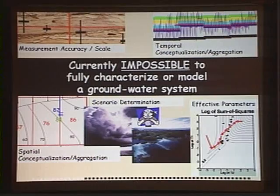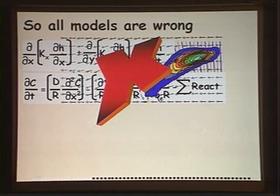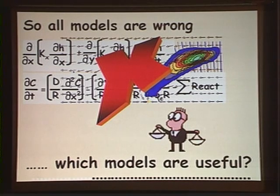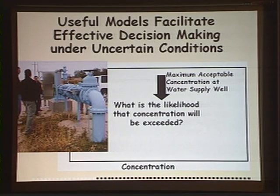It's currently impossible to fully characterize a groundwater system, or if we could, to fully represent it on a computer. Because of this, all our models are wrong. George Box said all models are wrong, some are useful, but he's left us with that challenge of deciding which are useful. To decide which model is useful, we need a definition of useful: models that facilitate making a decision in an uncertain situation.